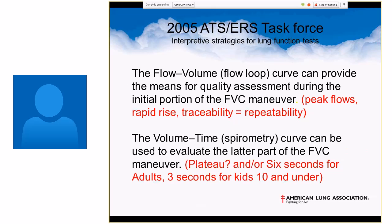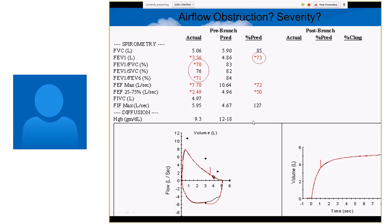The flow volume curve can provide the means to assess the quality during the initial portion of the vital capacity maneuver. Peak flows, rapid rise, and traceability equals repeatability. The volume time curve can be used to evaluate the latter part of the vital capacity maneuver. Did it plateau? Did they blow for six seconds? Little kids only have to, under 10, only have to blow for three seconds.